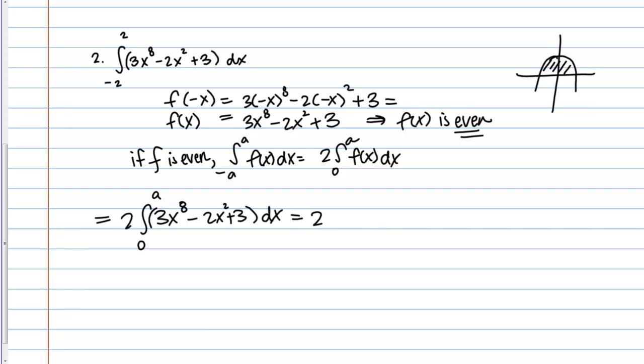I'm going to leave that 2 out front. I'm going to take the antiderivative. So, that's going to be 3x to the 9th over 9 minus 2x cubed over 3 plus 3x. And I'm going from 0 to 2. This should be a 2 up here.